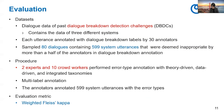Now for the evaluation. We use data sets of dialogue data from past dialogue breakdown detection challenges. The data contains three different dialogue systems, with each utterance annotated with dialogue breakdown labels by 30 annotators. We sampled 80 dialogues from the data set, containing 599 system utterances deemed inappropriate by more than half of the annotators. Two experts and 10 crowd workers performed error type annotation with the theory-driven, data-driven, and integrated taxonomies in a multi-label annotation task covering all 599 system utterances.